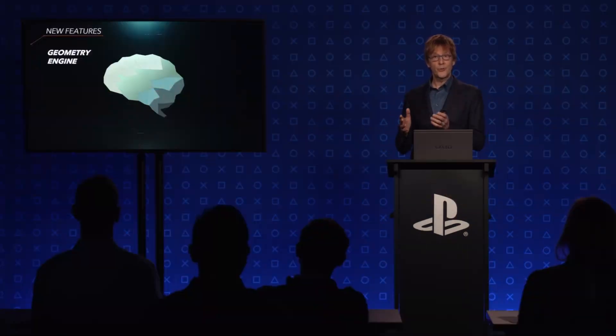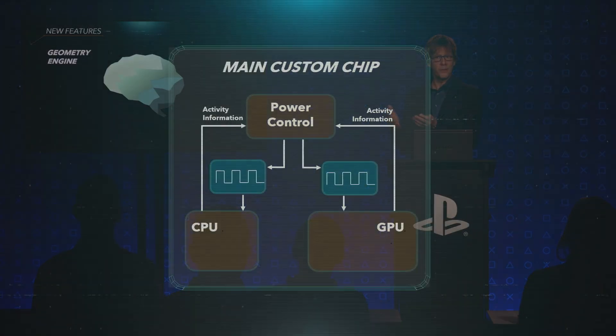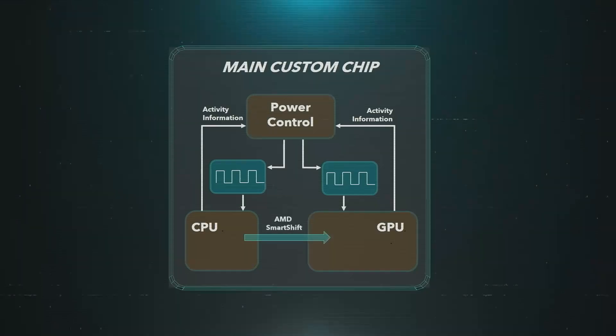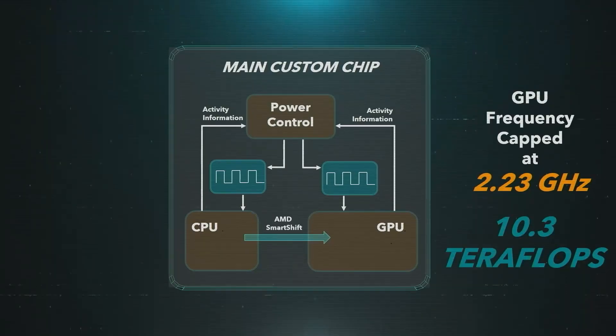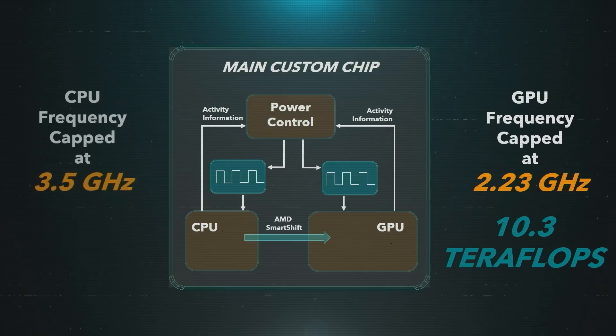On the PlayStation side, the teraflop number doesn't account for the elusive geometry engine or what it does. It also doesn't consider the cache scrubbers — for those 36 compute units, they remove stale cache at a rapid rate, so the CUs act more efficiently because you're not manually managing or scripting stale data removal. You start to realize that teraflops is just a number that doesn't consider other things contributing to efficiently getting graphics on screen.